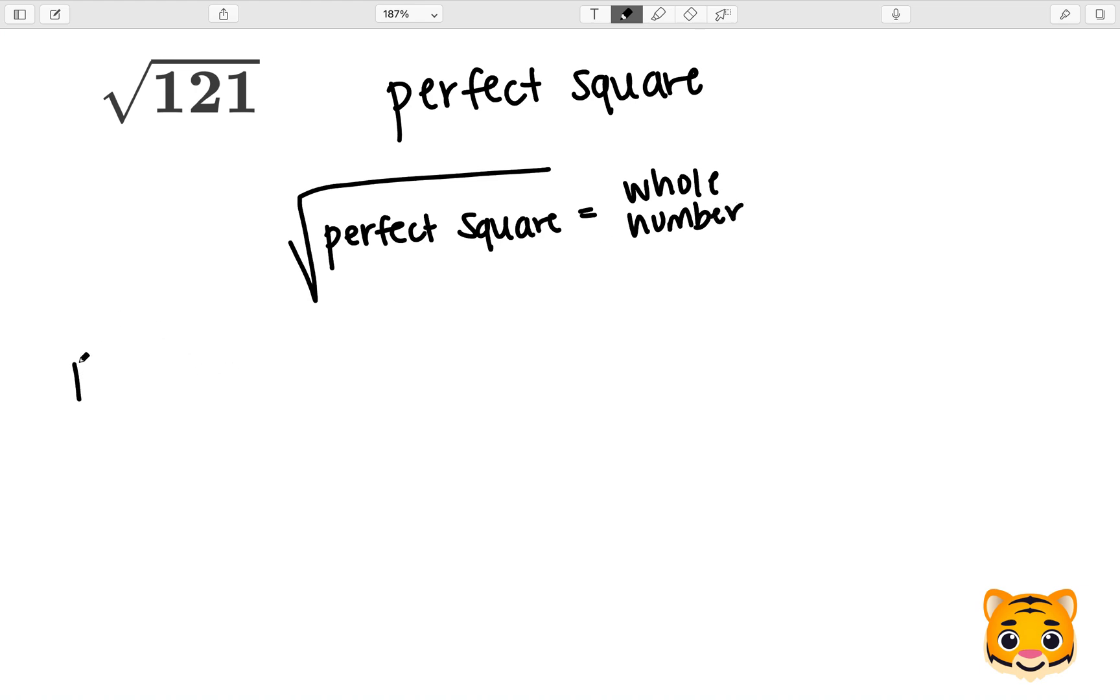Some examples of perfect squares include 1 squared, which is 1, 5 squared, which is 25, and 7 squared, which is 49.